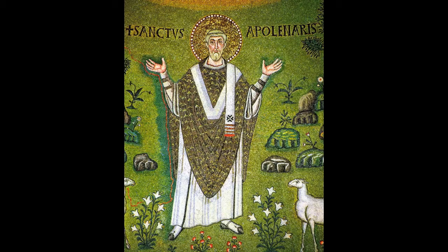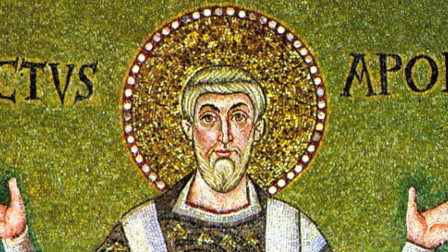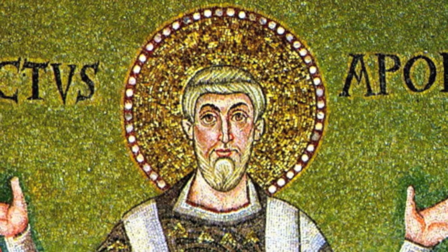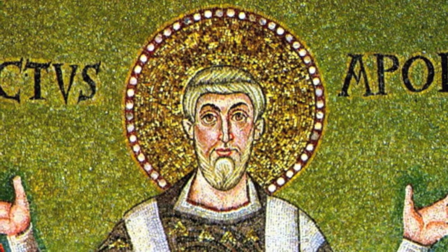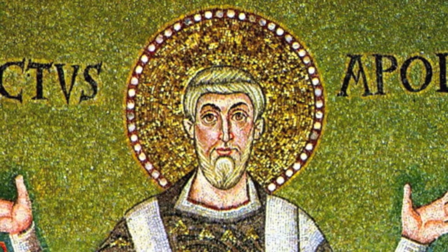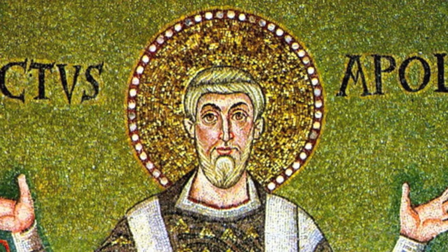When looking at the saint up close, you see that his head is surrounded by a large golden halo. This golden halo is very Byzantine in style and is often used in the early Christian church, specifically the Eastern early Christian church, to depict holy figures.